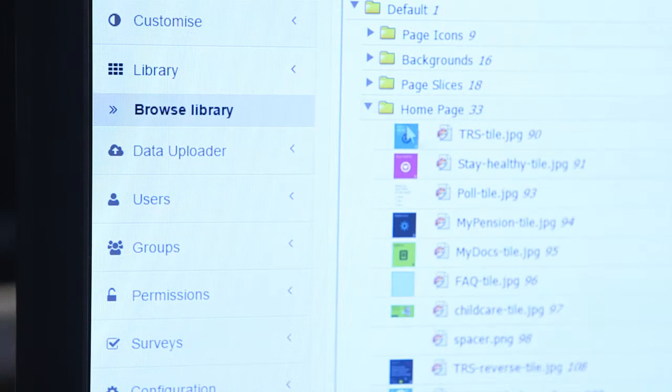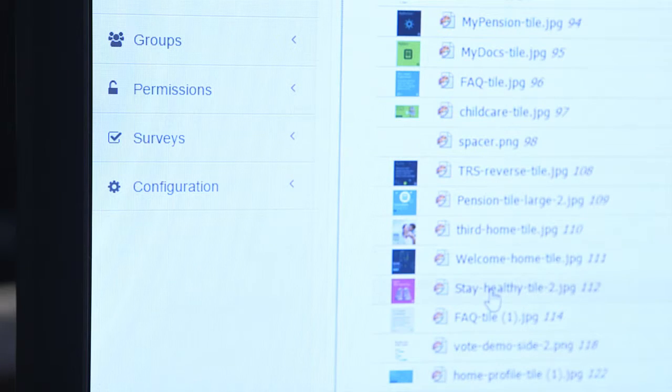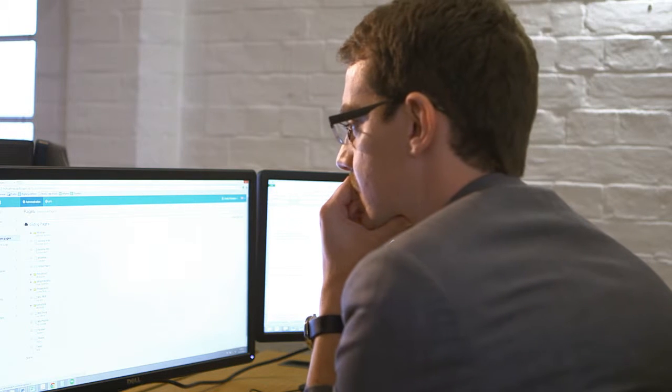Once they've securely logged in, benefits managers use the hub by linking into data, uploading HR data, linking to third-party systems, and all the management information and analytics is built in so you can see what your users are actually doing.